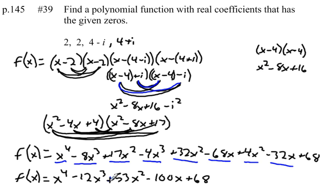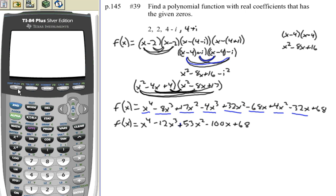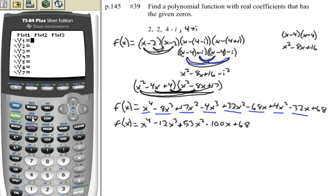And I can check that by graphing it. It should go through the x-axis at 2 and nowhere else because it won't show these imaginary terms. Let's check that out. So if I press my y equals key, let's try to type this in here, x to the 4th power.